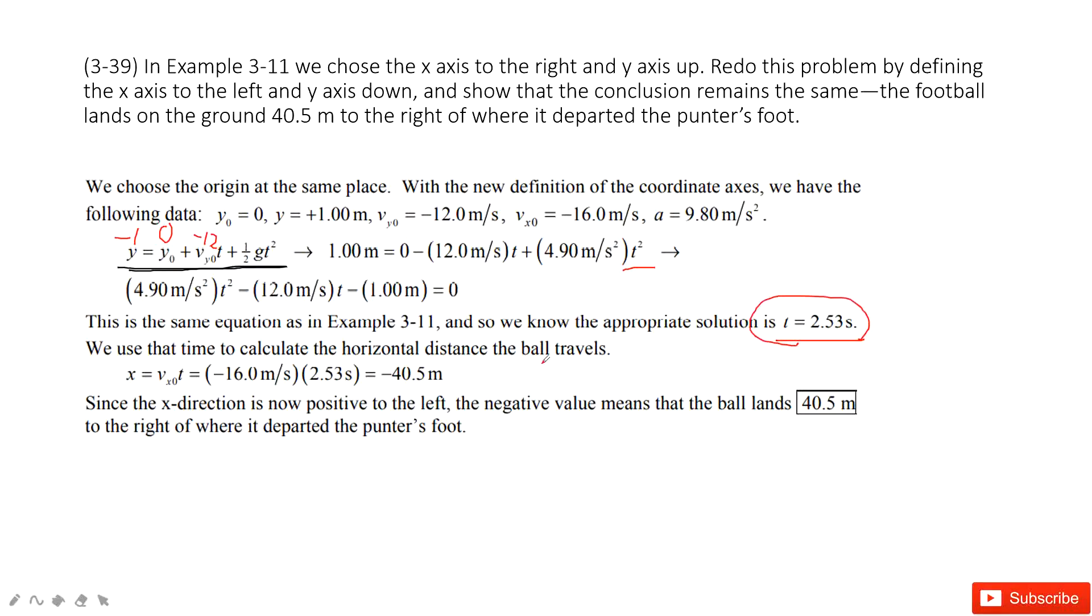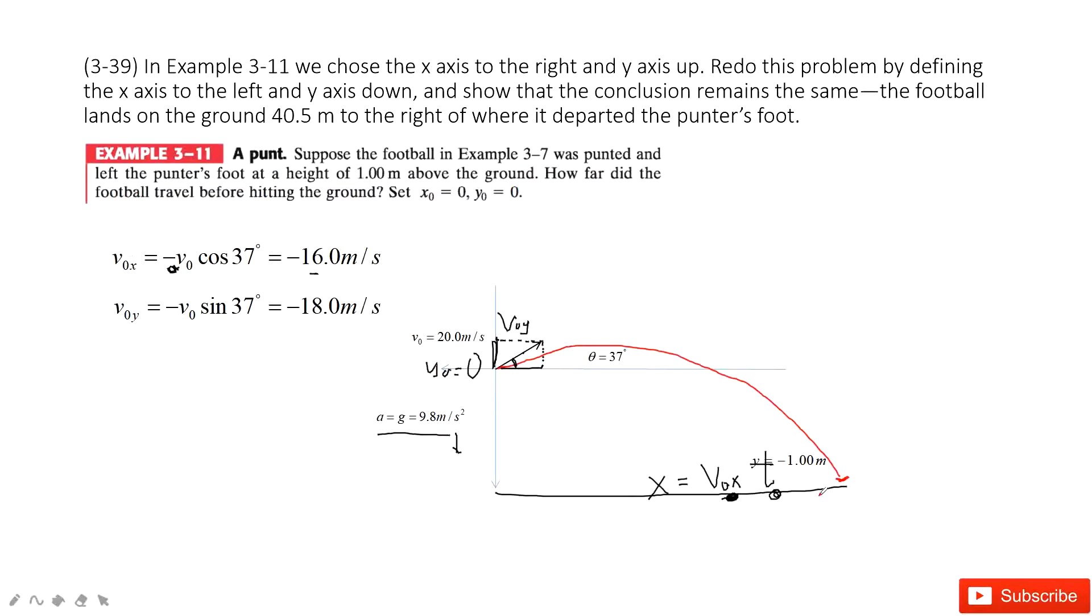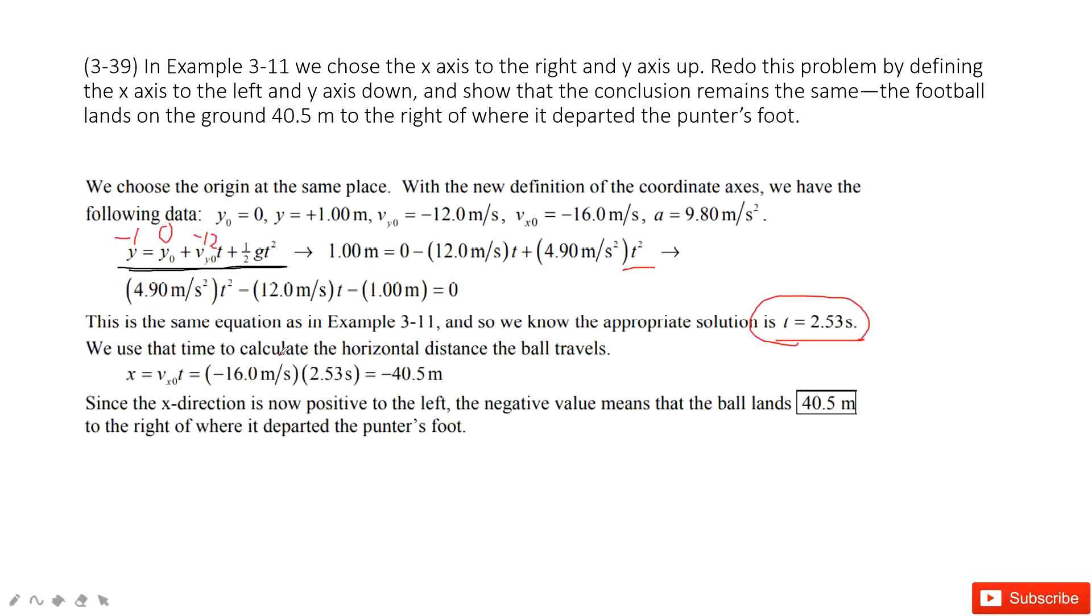After we get the time t, we use the x-component times time t. x-component times time t, we get it. The x direction is negative 40.5 meters. And then we take the magnitude, 40.5 meters. Thank you.